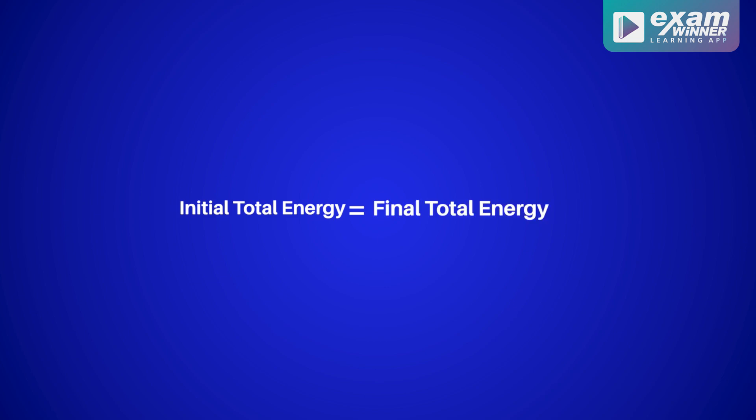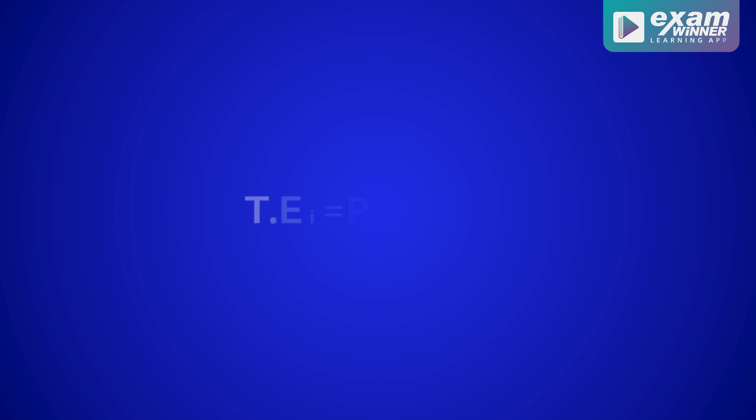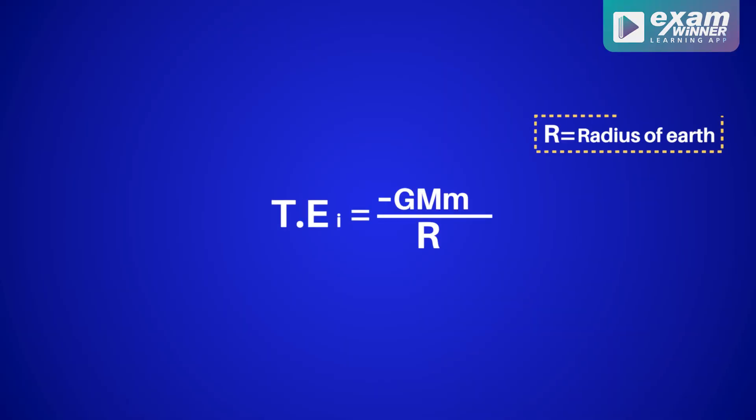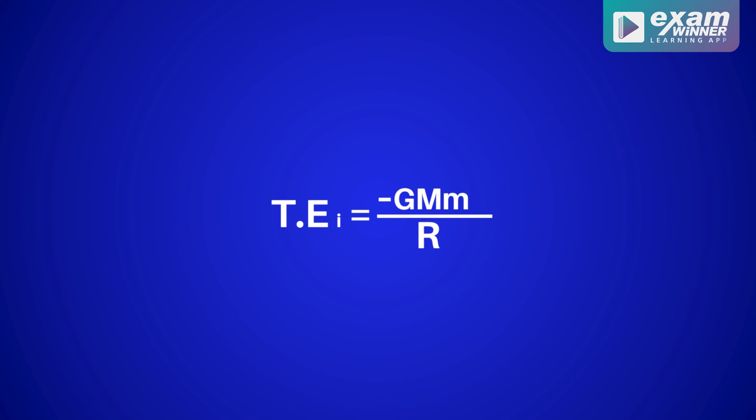What do we do with conservation of energy? Initial total energy is equal to final total energy. At the initial moment, this ball has total energy equal to kinetic energy plus potential energy. The initial potential energy is minus GMm by R, where R is the radius of Earth — the center-to-surface distance.